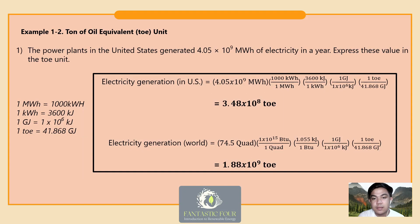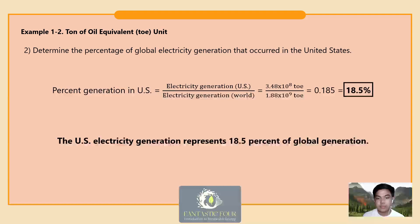Using the given unit conversions, the US electricity generation of 4.05 × 10⁹ MWh yields 3.48 × 10⁸ TOE. For the world electricity generation of 74.5 quad BTU, the answer is 1.88 × 10⁹ TOE. For the next problem — determining the percentage of global electricity generation that occurred in the United States — dividing US generation by world generation gives 0.185, or 18.5 percent. We conclude that US electricity generation represents 18.5 percent of global generation.